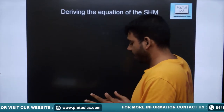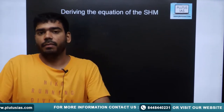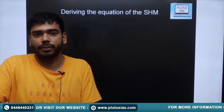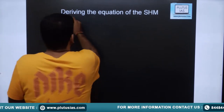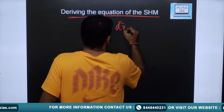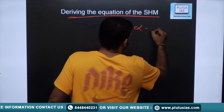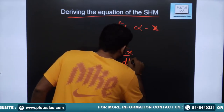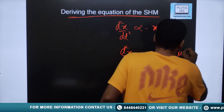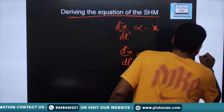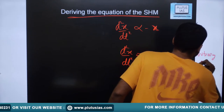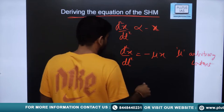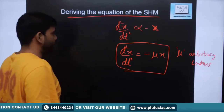Now let us start deriving the equation — defining the relation between x and t. We have to solve this second order differential equation. To remove the proportionality sign, we introduce an arbitrary constant nu, giving us d²x/dt² = −νx. This is a second order differential equation in one variable, and it is very simple to solve.